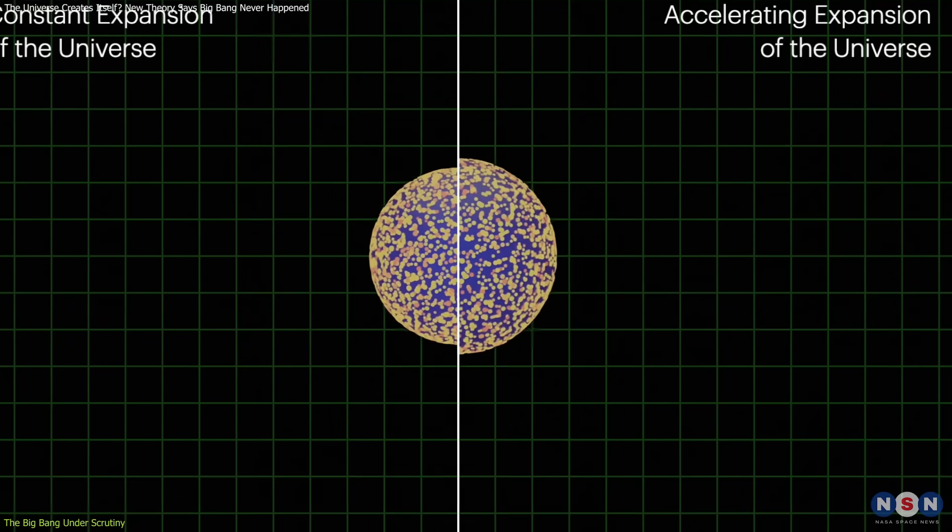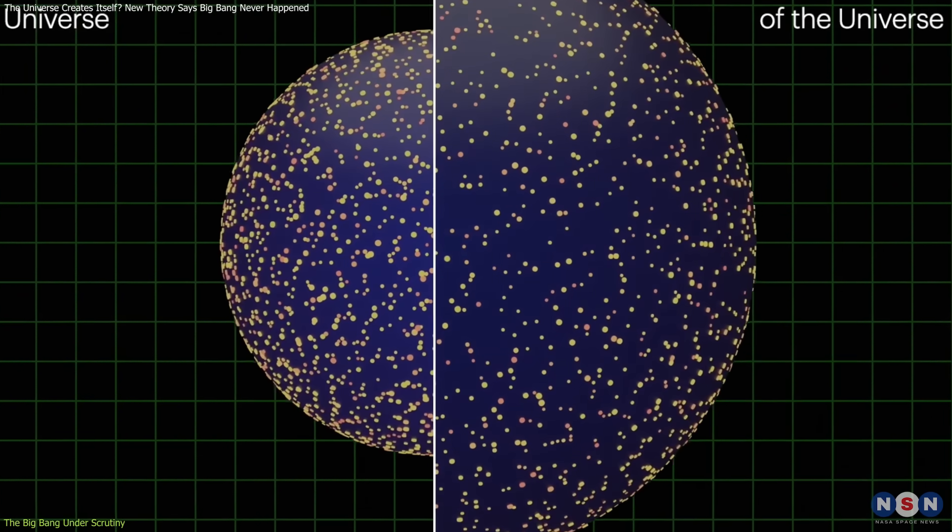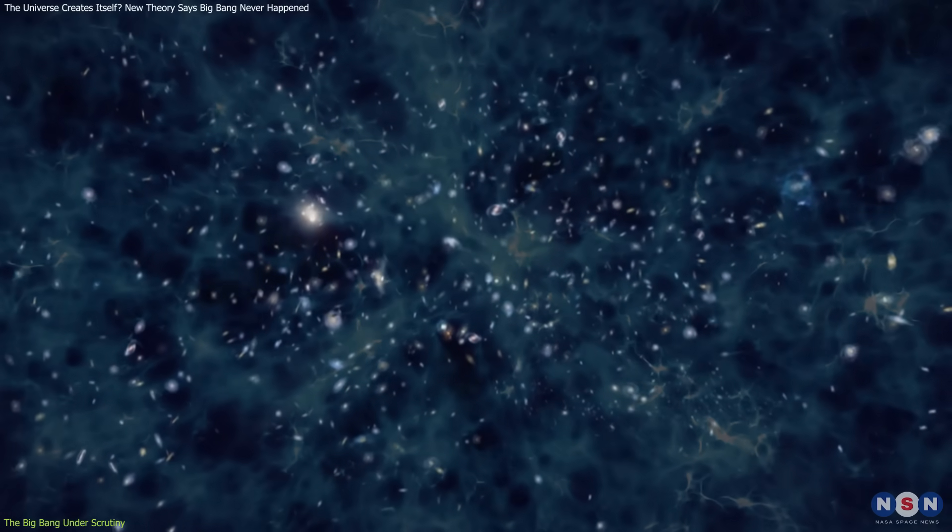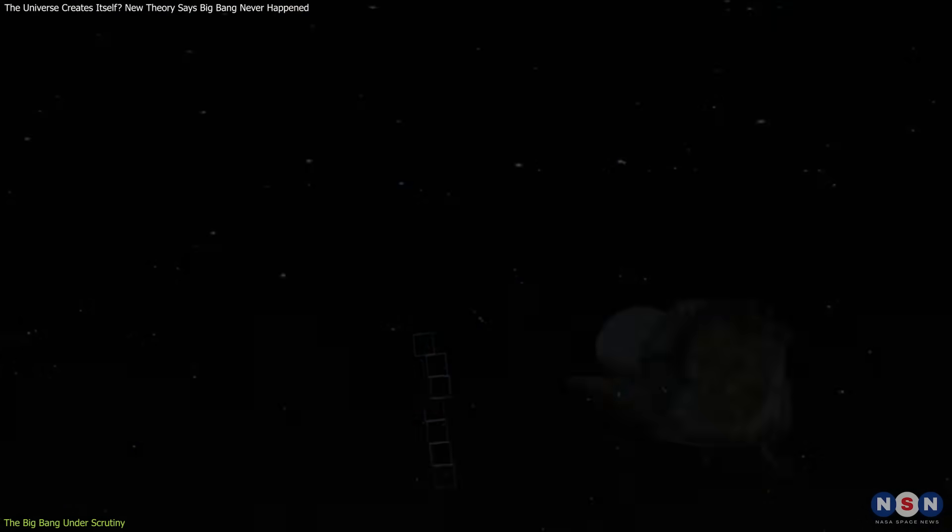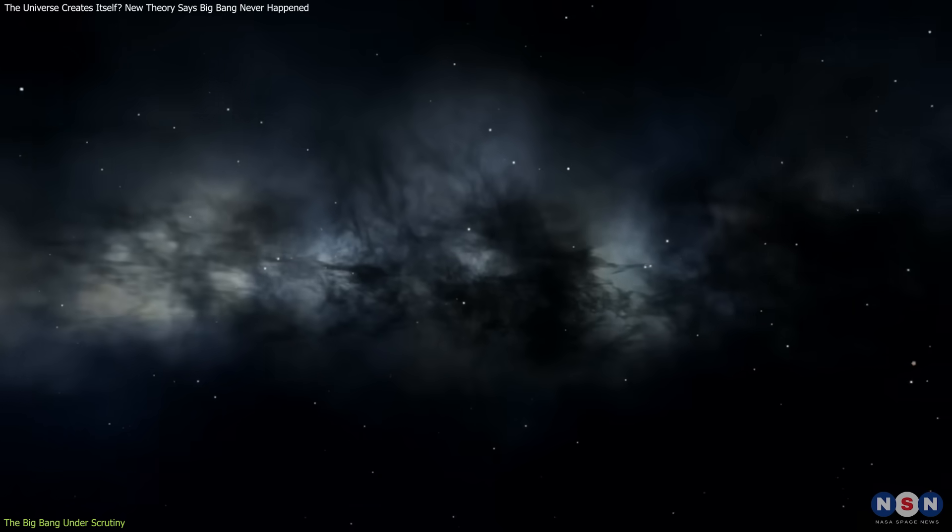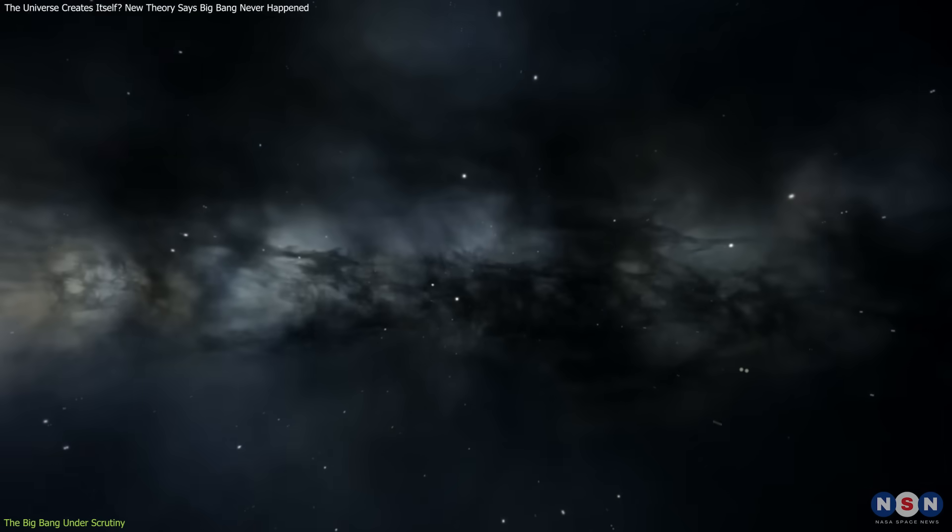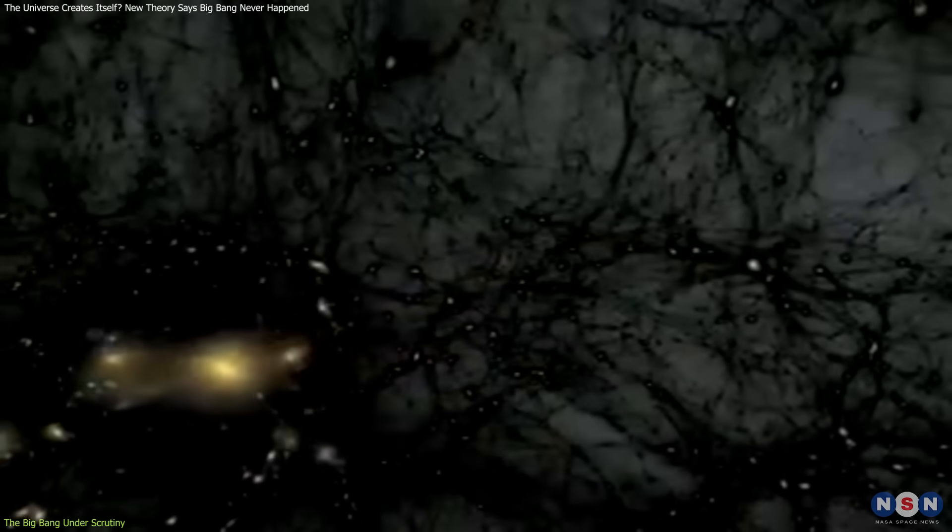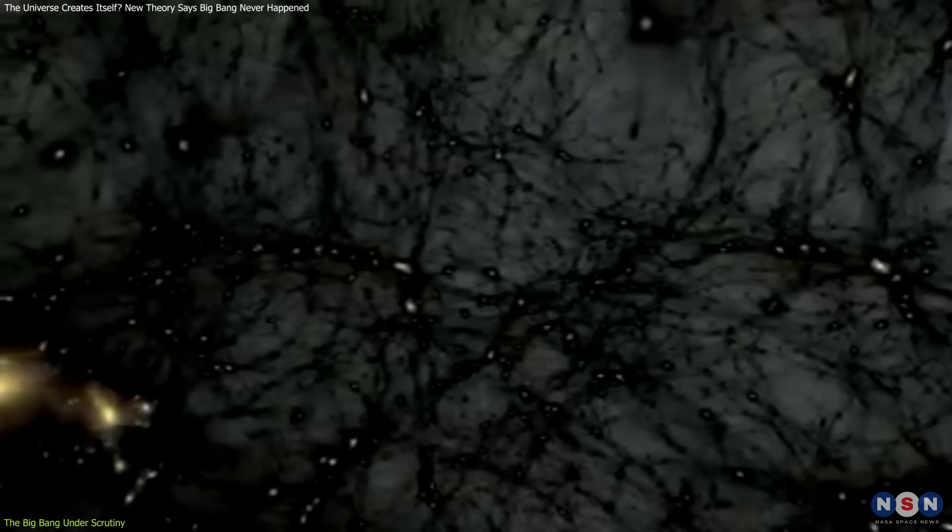Similarly, in 1998, astronomers observed that the universe's expansion was accelerating, not slowing down. This led to the introduction of dark energy, a theoretical repulsive force filling space. Even after decades of research, both dark matter and dark energy remain unconfirmed by direct observation. Their persistent invisibility has prompted some physicists to explore radically different ideas about how the universe works.